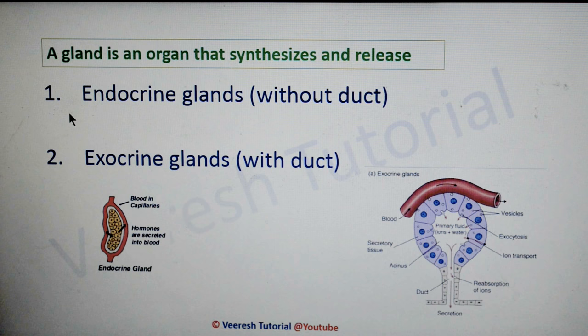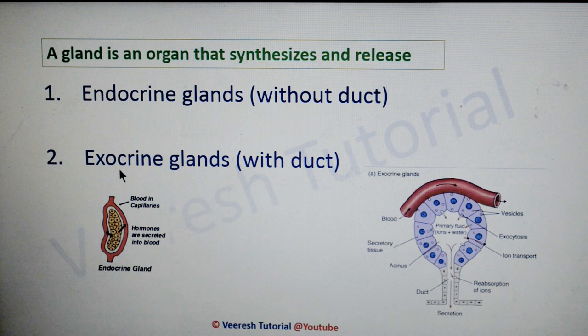The first one is endocrine glands. Endocrine glands are those glands that secrete their products or hormones directly into the hemolymph rather than through a duct, so ducts are absent. Exocrine glands are those glands that secrete their products into ducts which lead directly into the external environment. The products of exocrine glands exclude hormones.